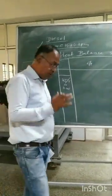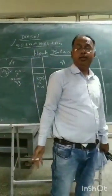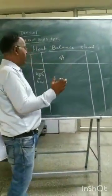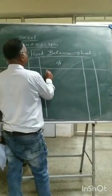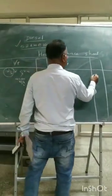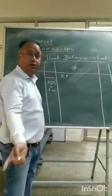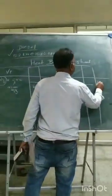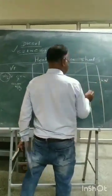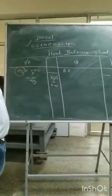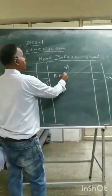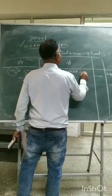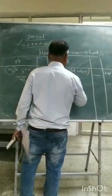What does the diesel engine do with this energy? The diesel engine utilizes that energy in the form of brake power. Whatever the brake power calculated earlier in Newton-meters, that value comes here and can be expressed in kilowatts. This is the useful output. But other than that, there are all losses.